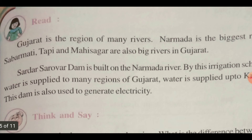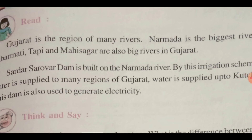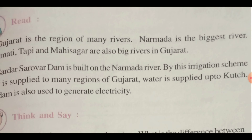Gujarat is a region of many rivers. Narmada is the biggest river; Sabarmati, Tapi, and Mahisagar are also big rivers in Gujarat. There is a dam on the Narmada river that provides water up to Kutch and is also used to generate electricity.